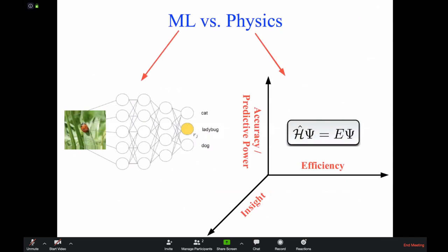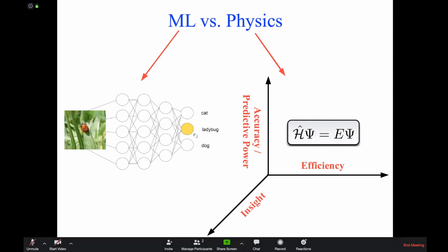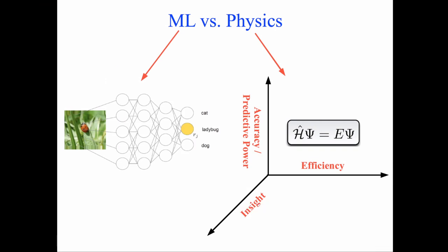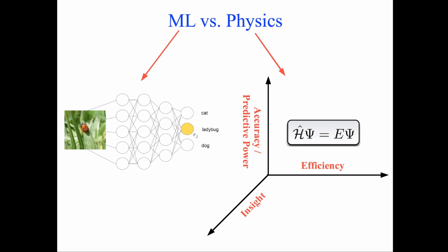Let me briefly compare machine learning and physics. In machine learning, a typical problem involves image recognition: you are given an image — say a ladybug — and a sophisticated non-linear regressor such as a neural network classifies it. Current deep neural networks are quite good at this image recognition task. If some images are misclassified, it's not a big catastrophe.